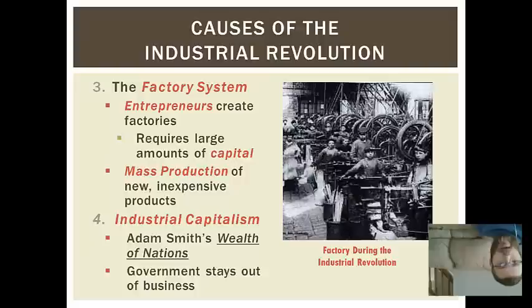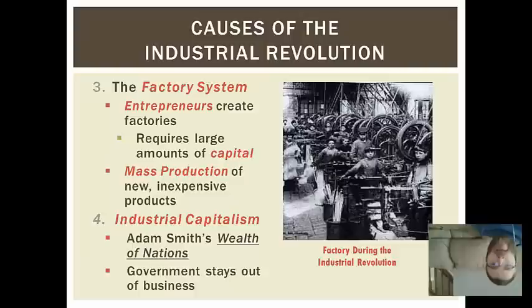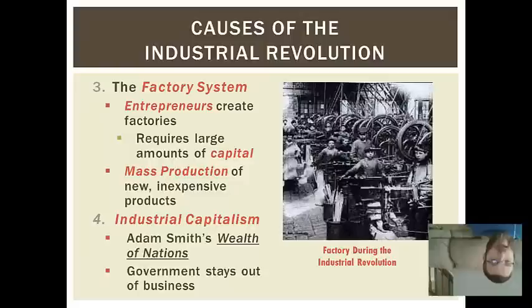Industrial capitalism can be put within the factory system because that's sort of what it took for factories to be created. Industrial capitalism basically means you want private owners or entrepreneurs to create the wealth in a community or society, and you want government to stay out of that business — out of economics essentially. All of this comes from Adam Smith's Wealth of Nations, and if you remember, he was one of our Enlightenment thinkers. This is sort of the freedom to make as much money as you want, if you think of it as one of those Enlightenment thoughts.